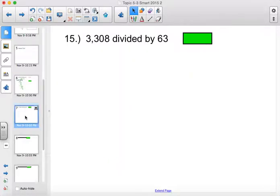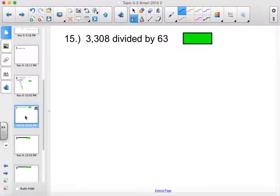Next problem. 3,308 divided by 63. I'll pause the video while you do the problem. All right, we're going to go over the quotient for 3,308 divided by 63. If you have questions or concerns, raise your hand and I'll be around the room to help you. Once again, we're just going to go through the quotient and the process.